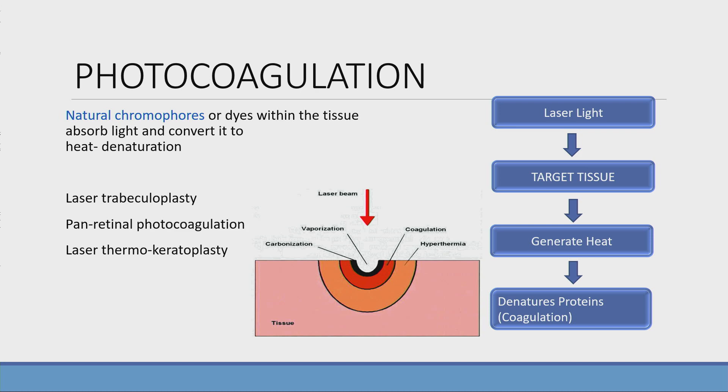Now the thermal reaction, that is photocoagulation. Here the laser light is absorbed by the target tissue. The chromophores in the target tissue help in laser absorption. That generates heat and causes denaturation of the protein. Examples: laser trabeculoplasty, PRP, laser thermokeratoplasty.